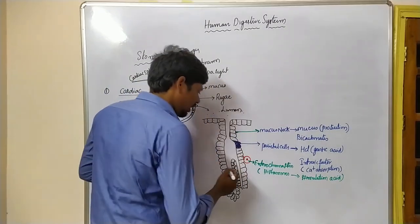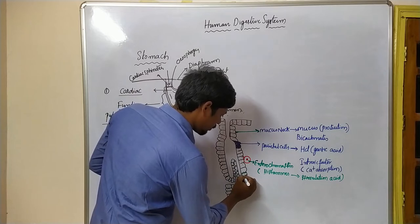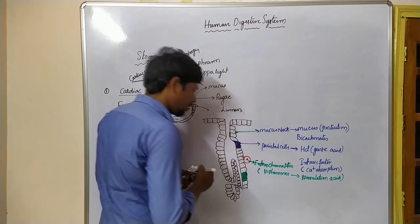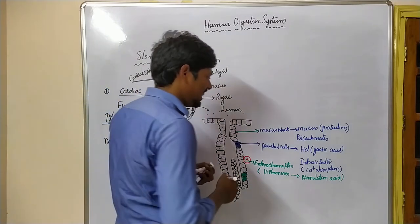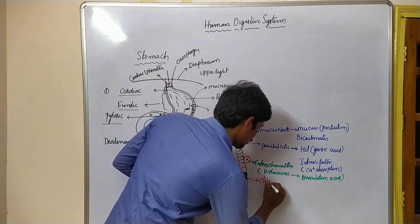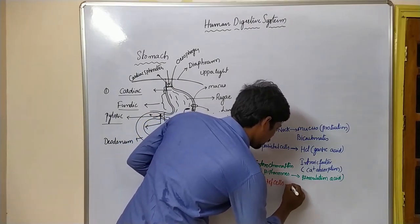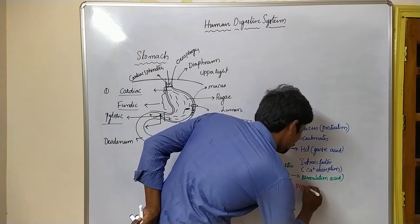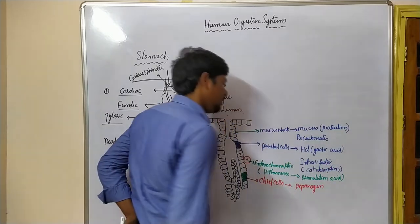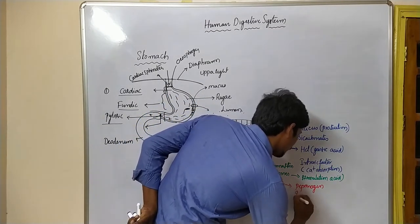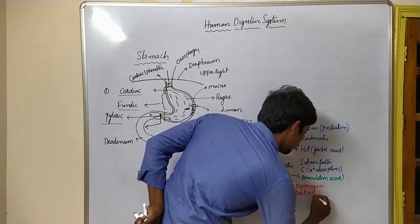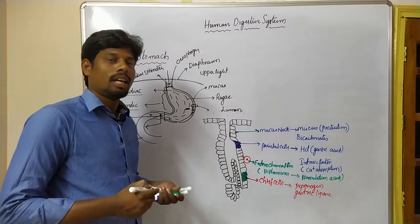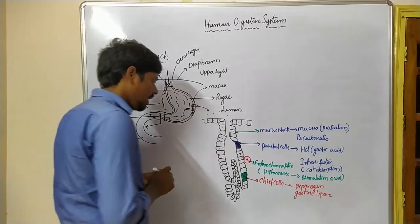At the same time, there are another cells called chief cells. Chief cells produce the important pepsinogen and also gastric lipase.